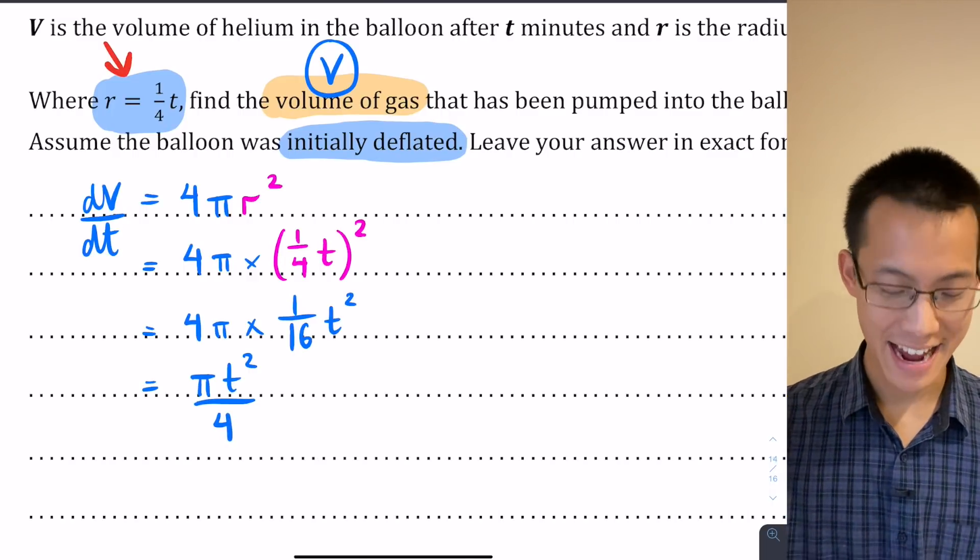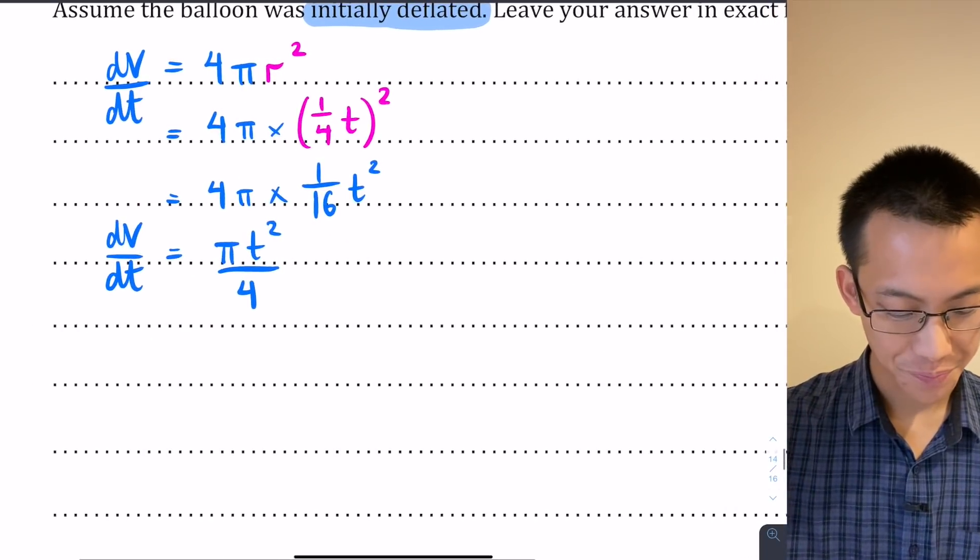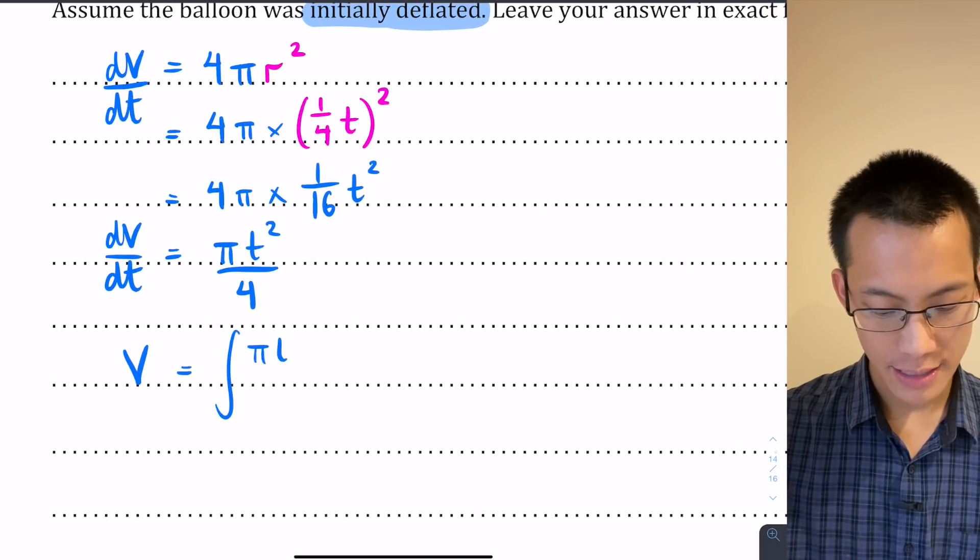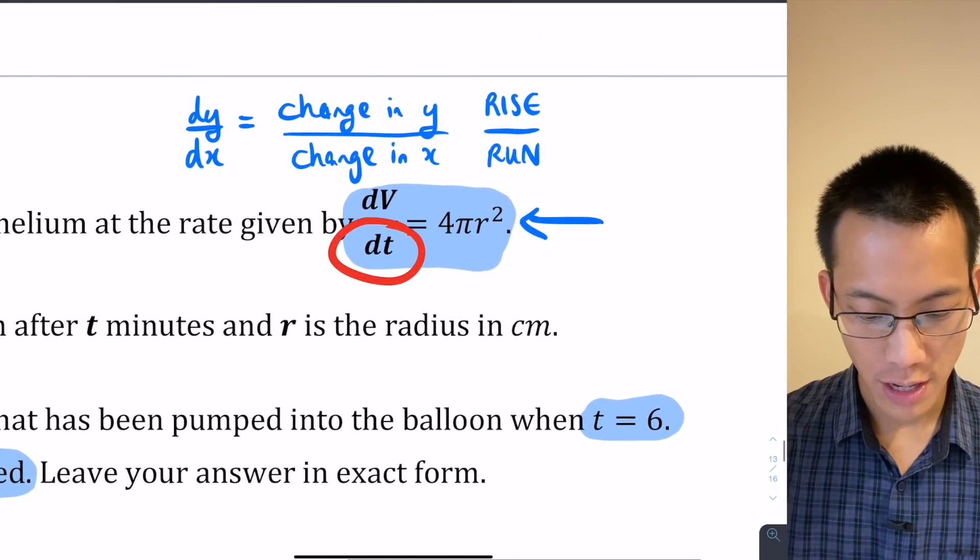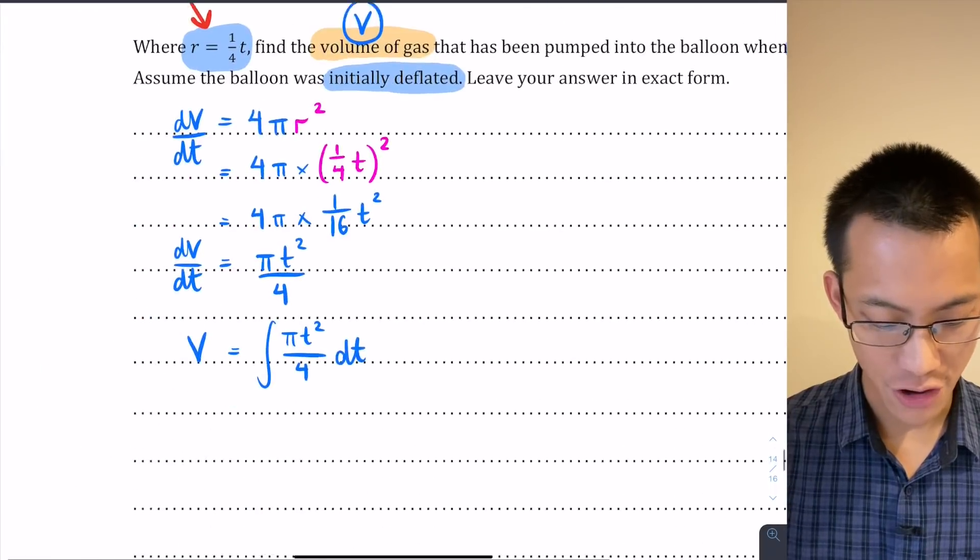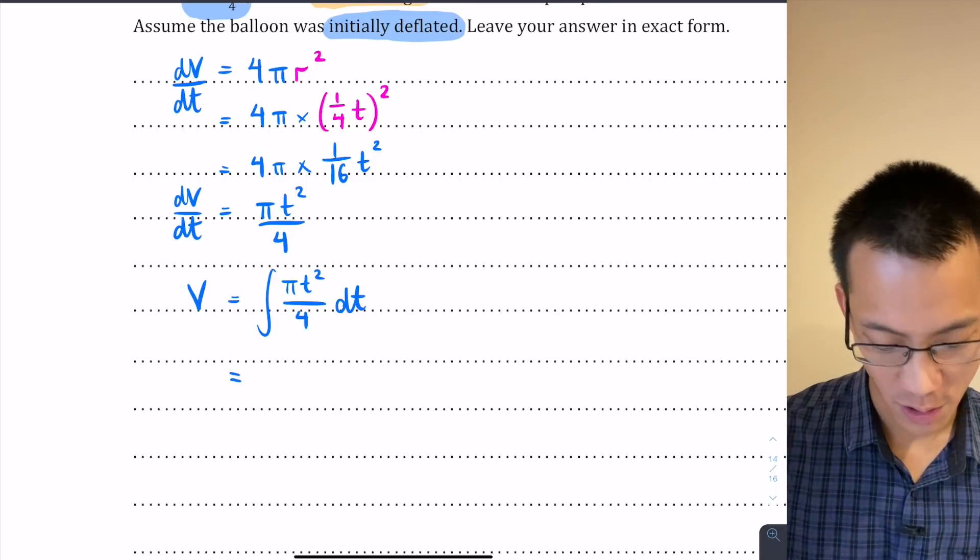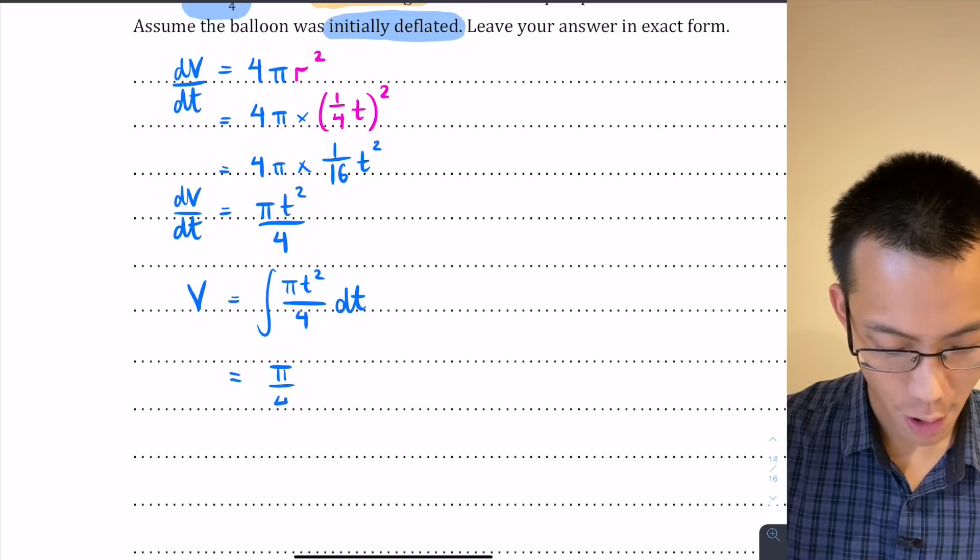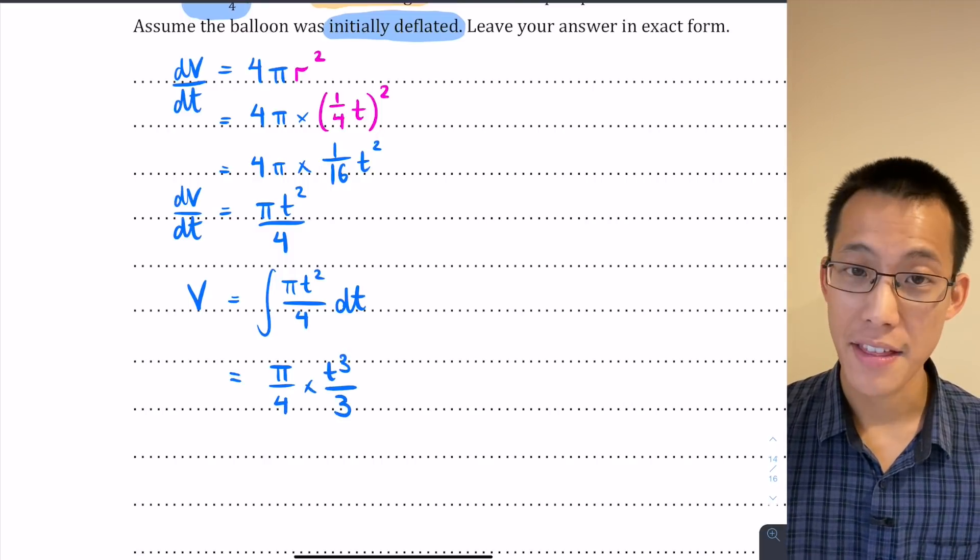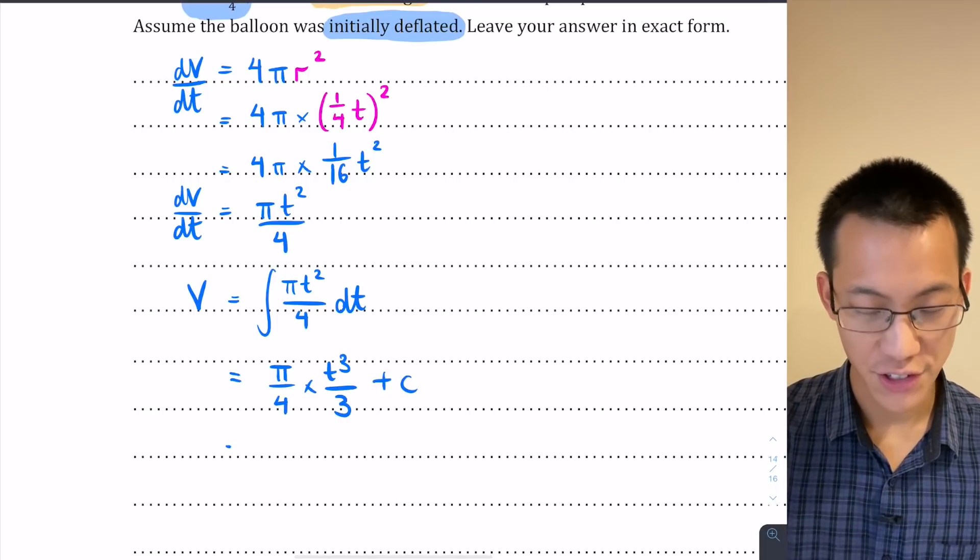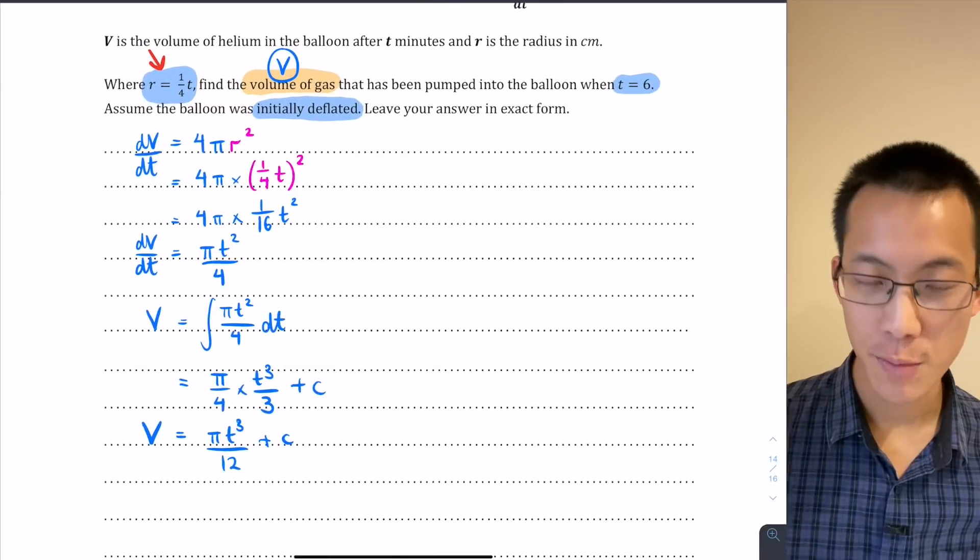This is what I can now integrate, dv/dt, because now the right hand side is in terms of t. So now let's have a go. V is the integral of this πt²/4 with respect to time. I know it's with respect to time because that's what the original line told me, dv/dt. Let's do this integration. The π/4, I'm not going to worry about that too much for now because it's just a constant. So I'm just going to write that out the front, π/4. Then it's got a t². t² is going to integrate into t³, then I divide by the new index. So t³/3 plus c. Let's tidy that up: πt³ on the top, 12 on the bottom, plus c. So this is my expression for volume.